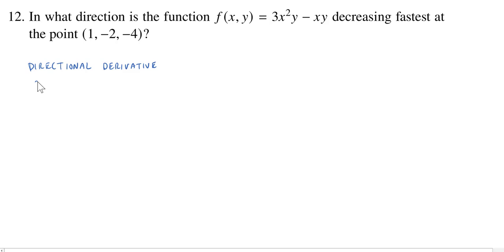So the directional derivative, which we denote by fu, at a particular point, in this case we want (1, negative 2), is given by taking the gradient of f at the point (1, negative 2) and then taking the dot product with the vector u.